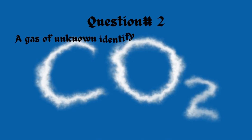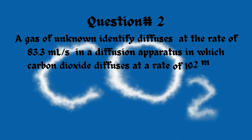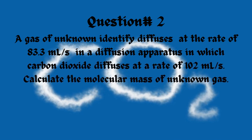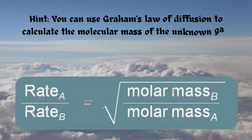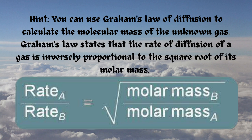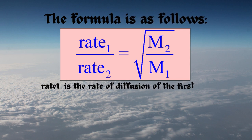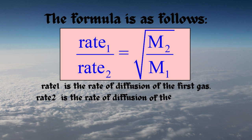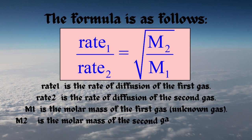Question 2. A gas of unknown identity diffuses at the rate of 83.3 mL/s in a diffusion apparatus in which carbon dioxide diffuses at a rate of 102 mL/s. Calculate the molecular mass of the unknown gas. Hint: You can use Graham's law of diffusion. Graham's law states that the rate of diffusion of a gas is inversely proportional to the square root of its molar mass. The formula is: Rate1 / Rate2 = √(M2 / M1), where Rate1 is the rate of diffusion of the first gas, Rate2 is the rate of diffusion of the second gas, M1 is the molar mass of the unknown gas, and M2 is the molar mass of carbon dioxide.